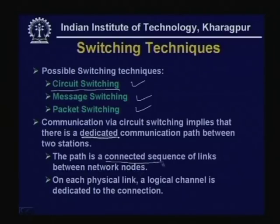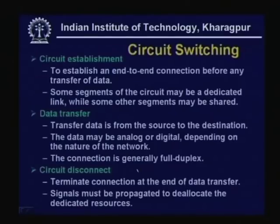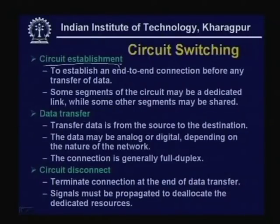The path is a connected sequence of links between network nodes — it is not necessary that there be a direct link; there may be a path through a number of nodes. On each physical link, a logical channel is dedicated to the connection. Circuit switching involves three important phases: circuit establishment, data transfer, and circuit disconnect.